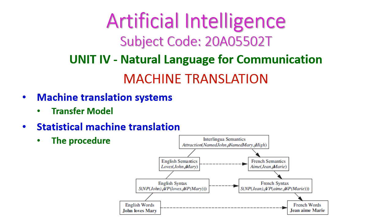In this Artificial Intelligence class, we will see Machine Translation, which comes under the fourth unit, Natural Language for Communication. Under Machine Translation, there are two subtopics: the first is Machine Translation System, under which we will see the Transfer Model, and the second is Statistical Machine Translation. We will also see the six steps to translate one language sentence to another language sentence.